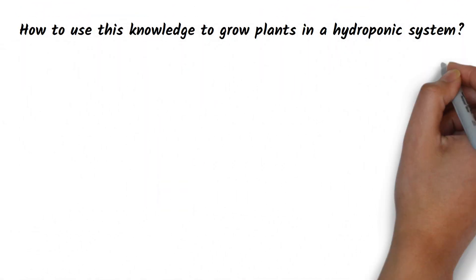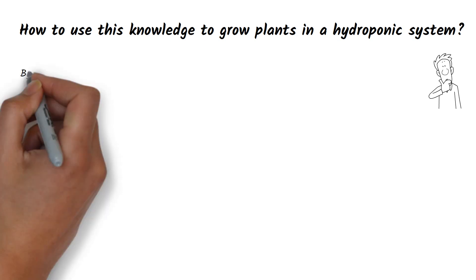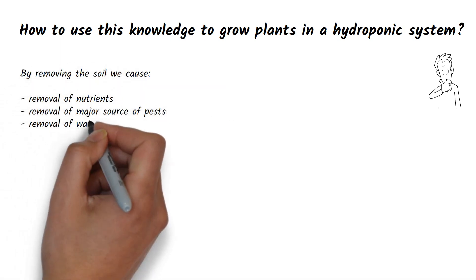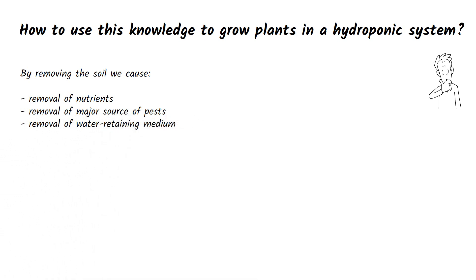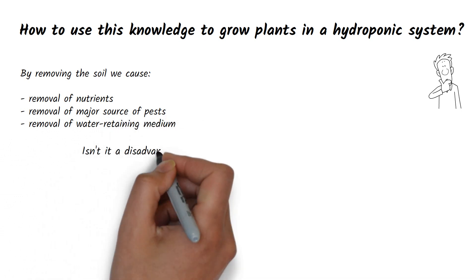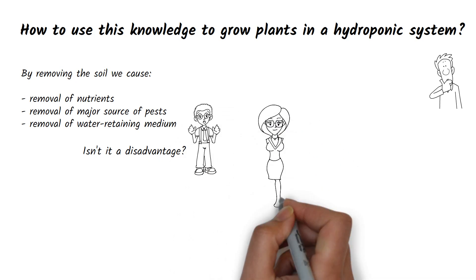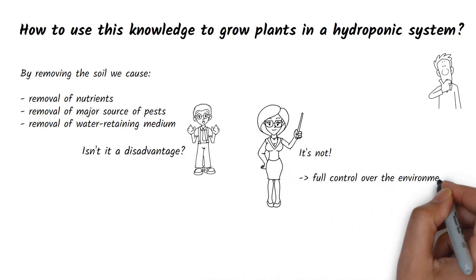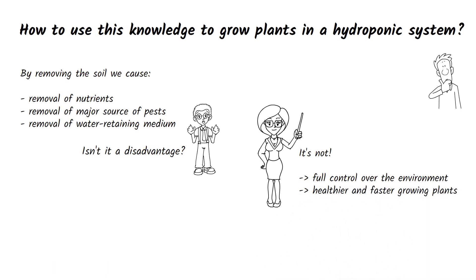How to use this knowledge to grow plants in a hydroponic system. By removing the soil, we take away the plant's nutrients, a major source of pests and a water-retaining medium. This might seem like a disadvantage, but in fact, it is the opposite. We gain full control over the environment and have the ability to grow healthier and faster growing plants.